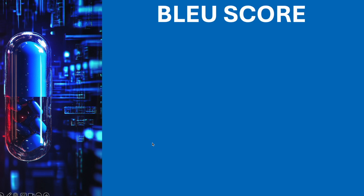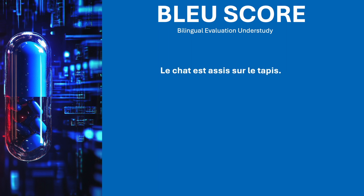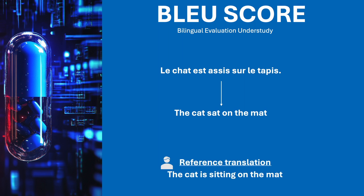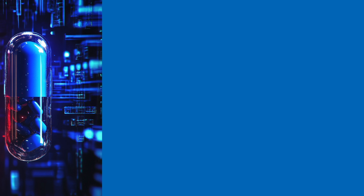Let us start with the BLEU score, which is used to check the quality of translation. BLEU stands for Bilingual Evaluation Understudy. Let me take a very simple French sentence such as 'le chat est assis sur le tapis.' And let us say the large language model made an English translation: 'the cat sat on the mat.' Now how can we judge the quality of this translation? We need a reference translation which is given by human expert translators, and let us say the reference translation is 'the cat is sitting on the mat.'